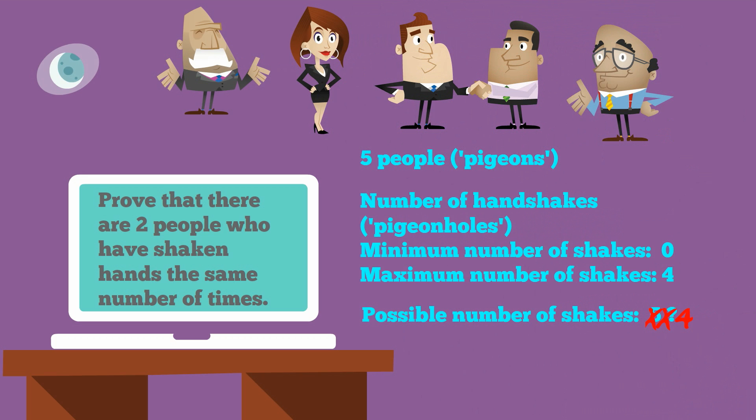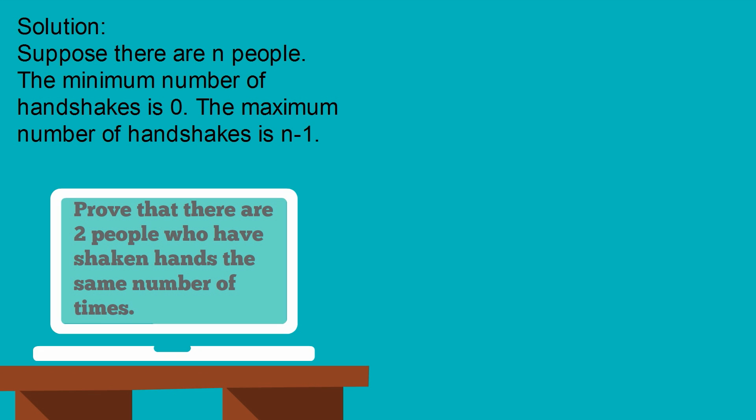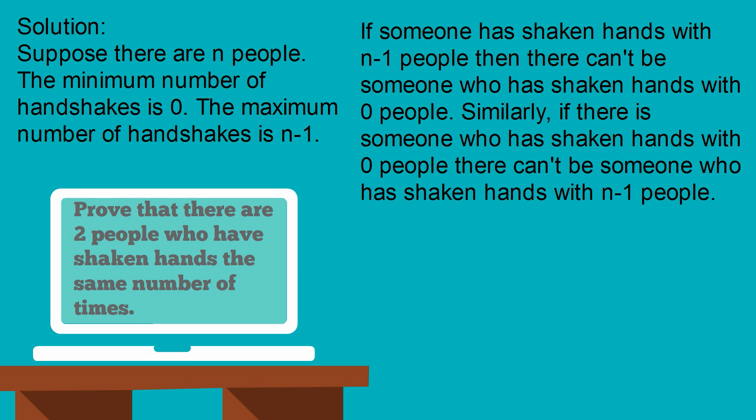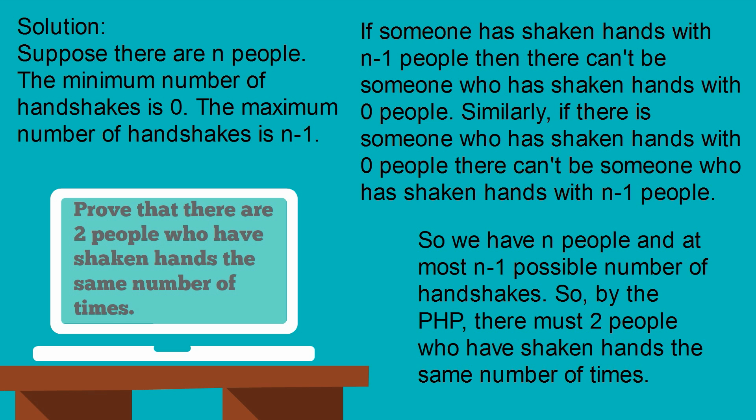Suppose there are n people. The minimum number of handshakes is zero and the maximum is n minus one. If someone has shaken hands with n minus one people, then there can't be someone who has shaken hands with zero people. Similarly, if there's someone who has shaken hands with zero people, there can't be someone who has shaken hands with n minus one people. So we have n people and, at most, n minus one possible numbers of handshakes. Therefore, by the pigeonhole principle, there must be two people who have shaken hands the same number of times.